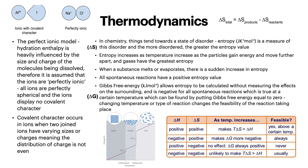In chemistry, things tend towards a state of disorder. Entropy is a measure of this disorder, and the more disordered, the greater the entropy value. Again, we've got little symbols here that are important to remember for equations. Entropy increases as temperature increases, as the particles gain energy and move further apart, and gases have the greatest entropy — they move around a lot more than liquid and solid, so there's a lot more disorder. When a substance melts or evaporates, there is a sudden increase in entropy, and all spontaneous reactions have a positive entropy value.